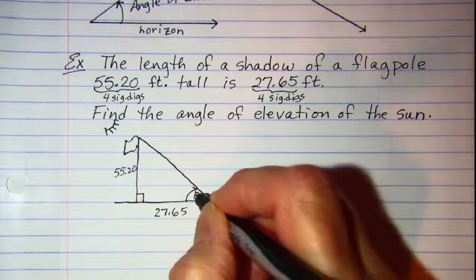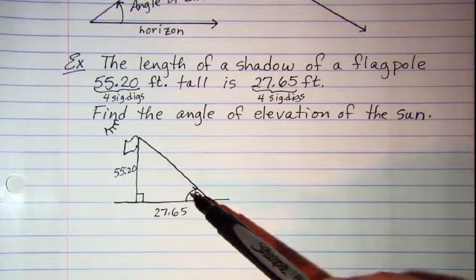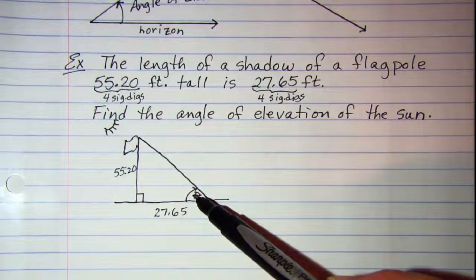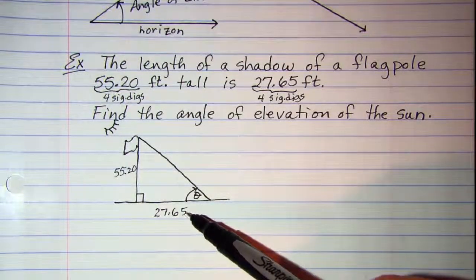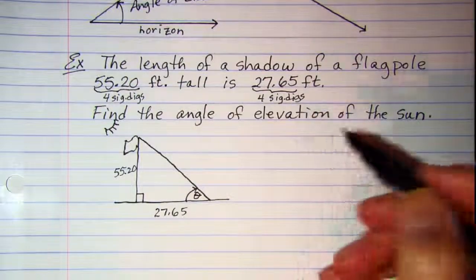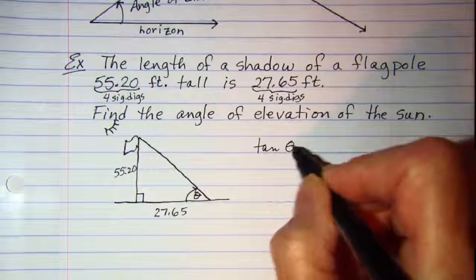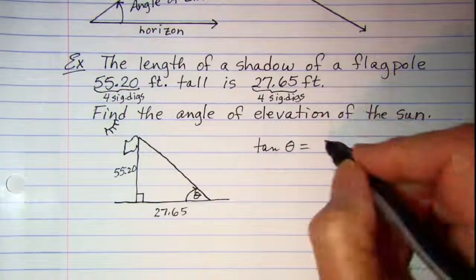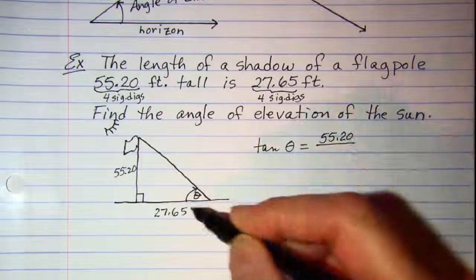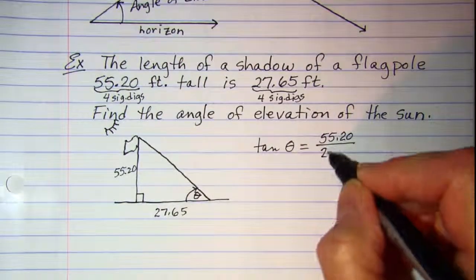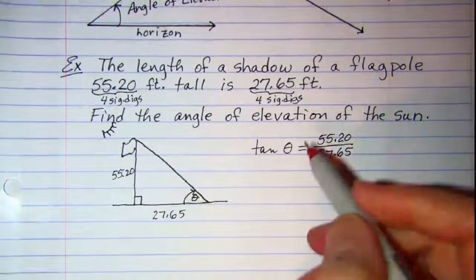We can call that theta. Now across from theta is 55.20 feet tall, and adjacent to theta is 27.65 feet tall. So we need to use the trig function tangent, and we have tangent of theta is equal to opposite, which is 55.20 feet tall, divided by the adjacent, which is 27.65 feet tall.